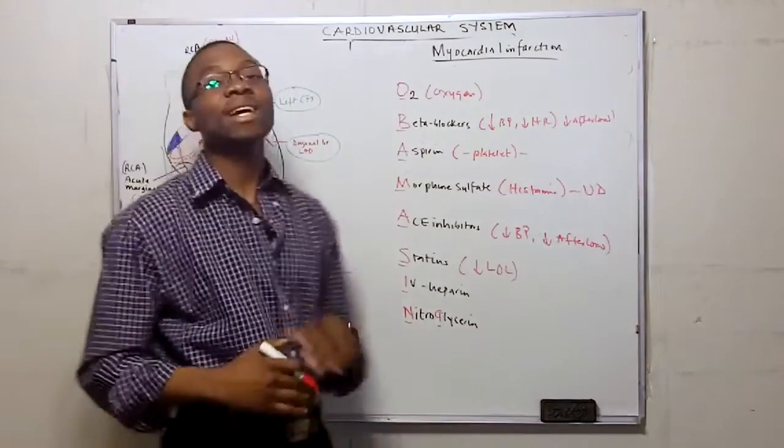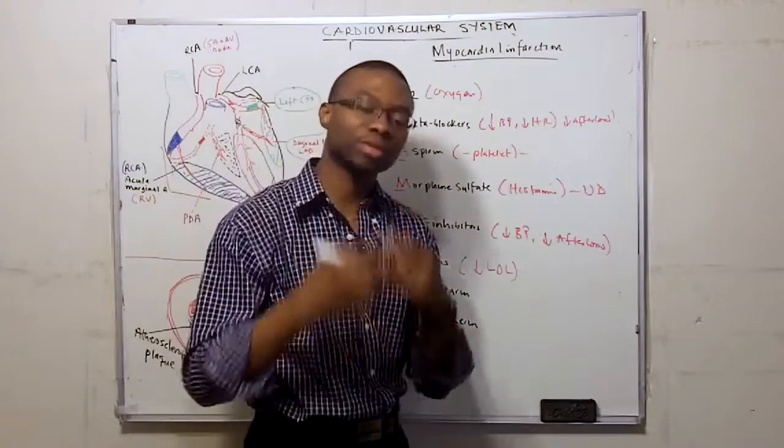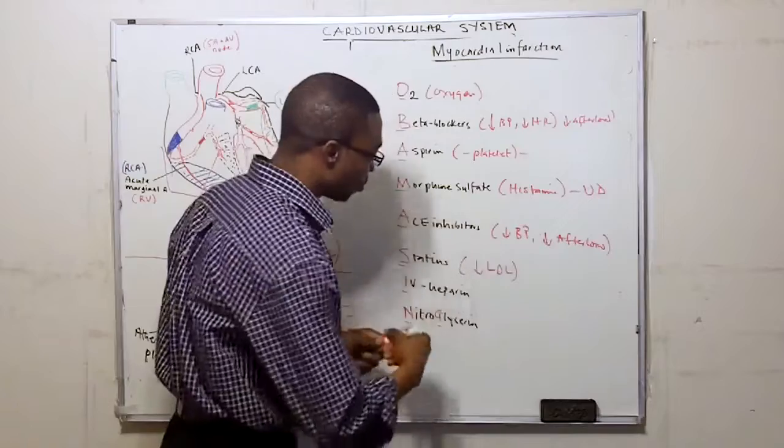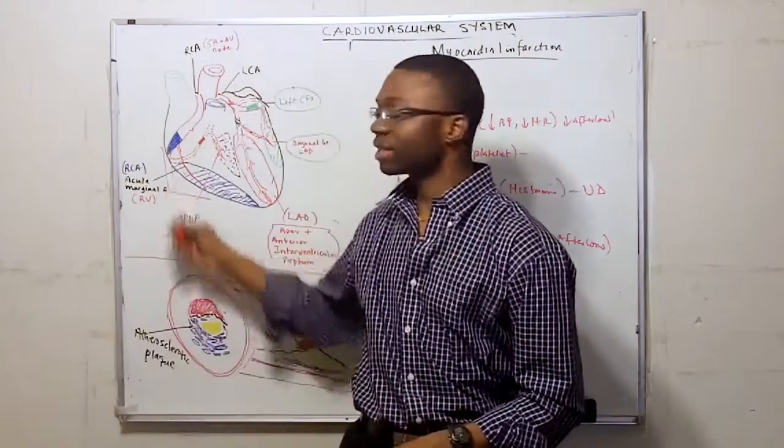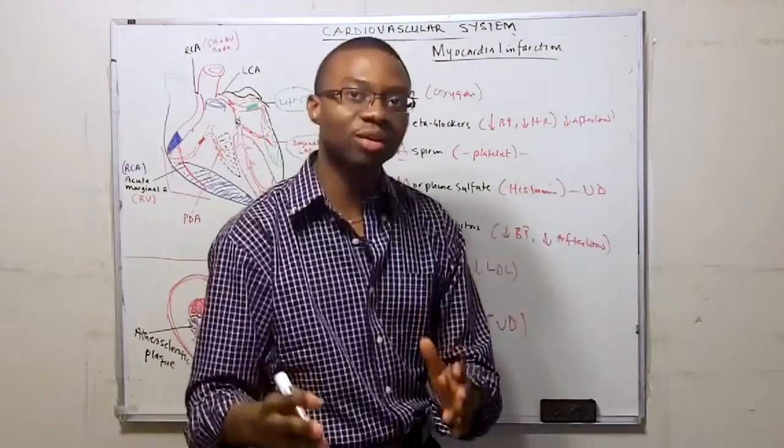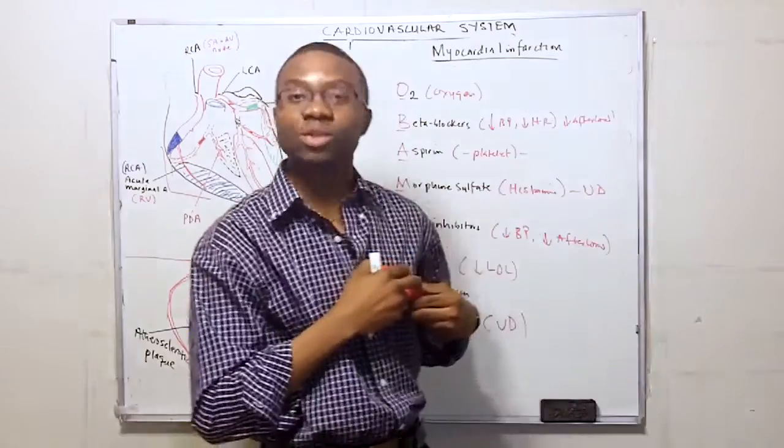And because of the Sings, I'm going to give them sublingual nitrate. They pop it into their mouth, it dissolves, and it causes vasodilation of their coronary arteries. It's also going to vasodilate the venous system. So it decreases preload, decreases the work on the heart, so the heart doesn't have to work too hard.